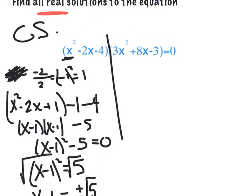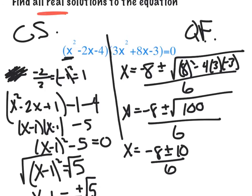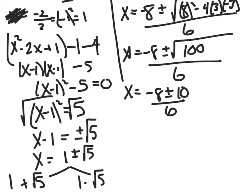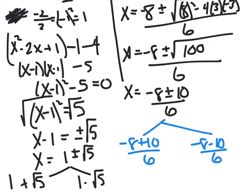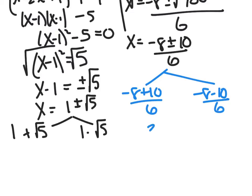On the other side, I could try factoring but it may not work, and I don't like completing the square when the leading coefficient is bigger than 1, so I'll use the quadratic formula again. Working through it, I actually get a nice number under the radical — 100 — which means this could have factored. So x = (-8 + 10)/6 and x = (-8 - 10)/6. That gives x = 2/6 = 1/3, and x = -18/6 = -3.